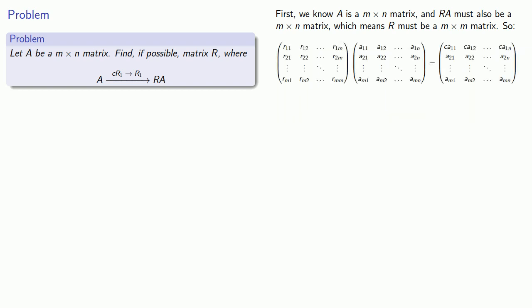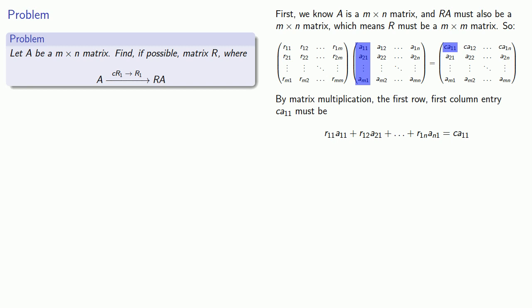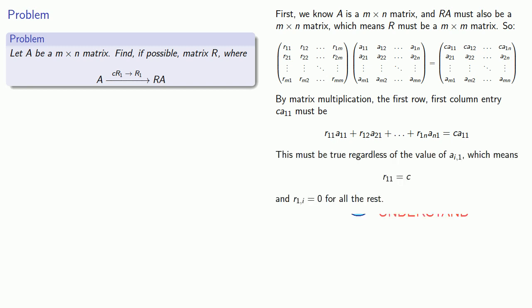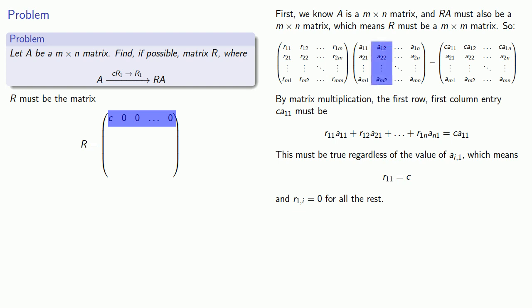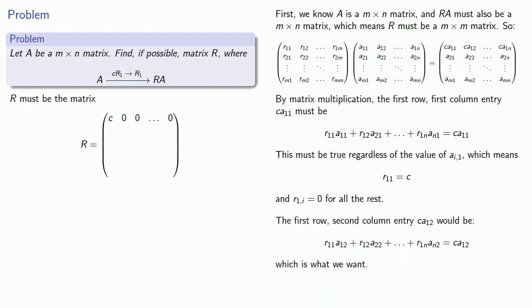By matrix multiplication, the entry in the first row, first column must be the sum of the componentwise products of the first row of R with the first column of A, and we'd like that to be C times A₁₁. This has to be true regardless of the values of the entries of the first column of A, so the only way to guarantee this is to make R₁₁ equal to C and R₁ᵢ equal to 0 for all other entries. With this as the first row of R, multiplying by any column will give C times the corresponding entry of the first row of A, which is exactly what we want.